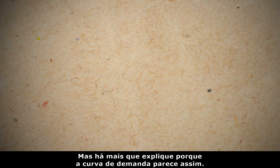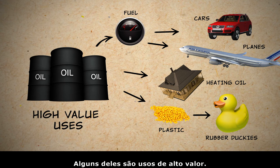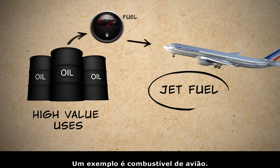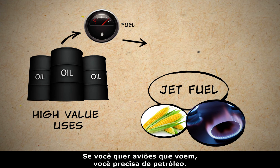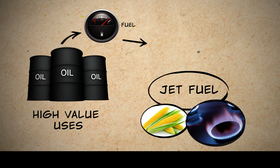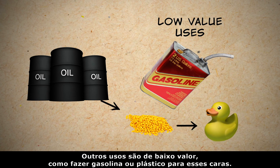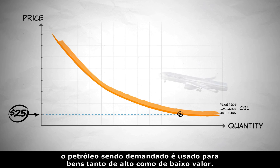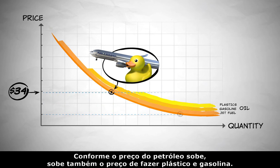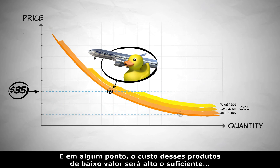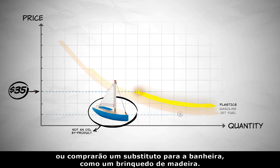But there's more to why the demand curve looks like this. Oil has many uses. Some of those uses are high-value uses — uses for which oil has few substitutes. An example would be jet fuel. Right now, you can't fly jets on corn or natural gas. If you want planes that fly, you're stuck with using oil. Other uses are low-value uses, like making gasoline or plastic for these guys. When oil prices are relatively low, the oil that is being demanded is used for high and low value goods alike. As the price of oil goes up, so does the price of making plastic and gasoline. And at some point, the cost of these low-value use products will get high enough that some people might skip buying a rubber ducky altogether or buy a substitute like a wooden bath toy.